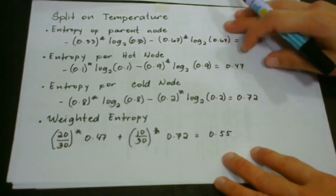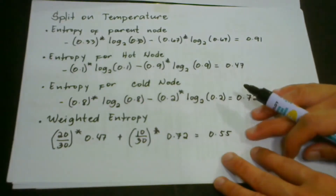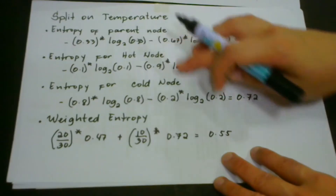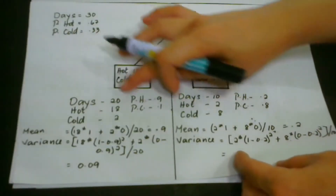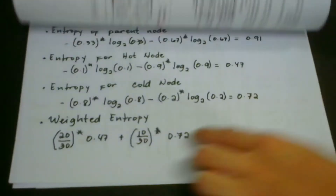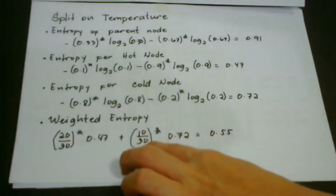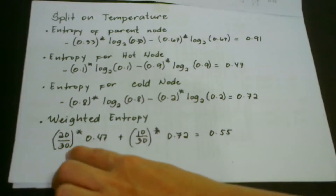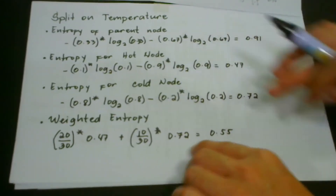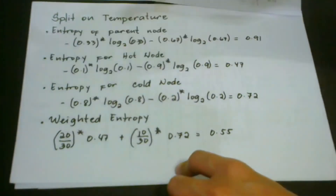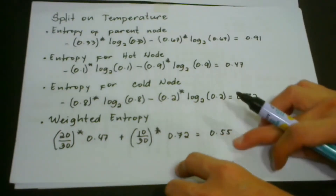After getting the entropies of the different nodes, we now get the weighted entropy of the hot node and the cold node. We have 20 over 30 — because we have 20 days for the hot and 10 days for the cold, all in 30 days. So we calculate 20/30 times 0.47 plus 10/30 times 0.72, and we get 0.55. That means for the split on temperature, we have 0.55 entropy.